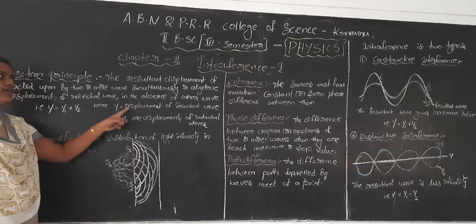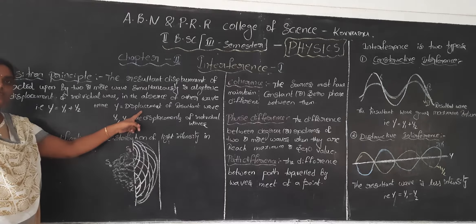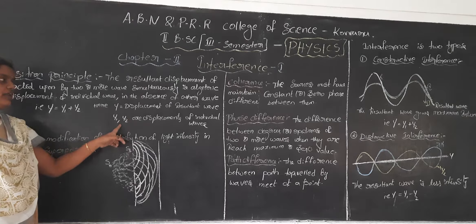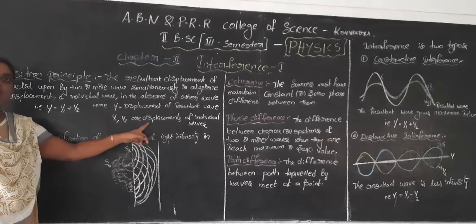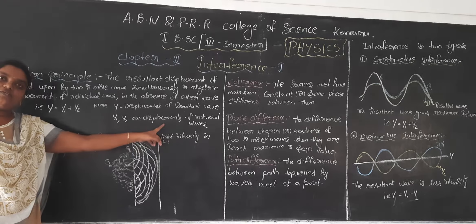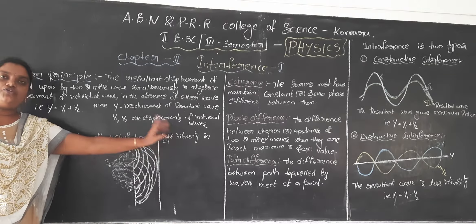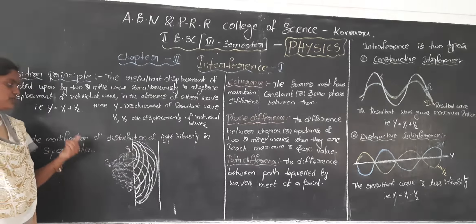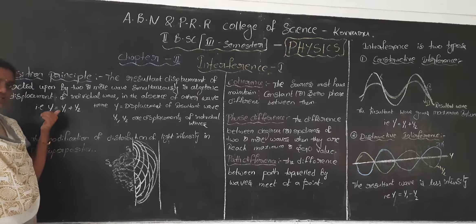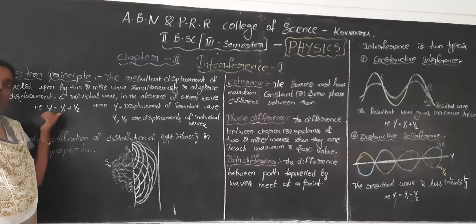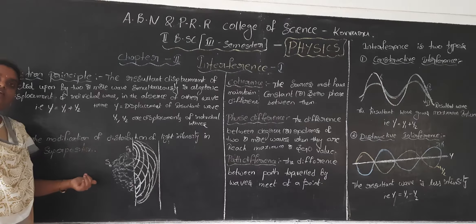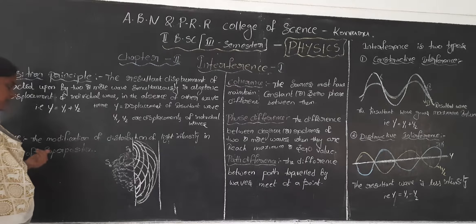That is: Y equals Y1 plus Y2. Here, Y is the resultant wave, and Y1 and Y2 are the resultant displacements of the individual waves. So the Superposition Principle leads to what is called the Interference Pattern.